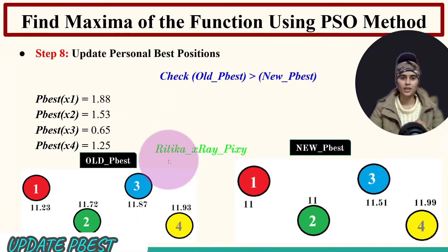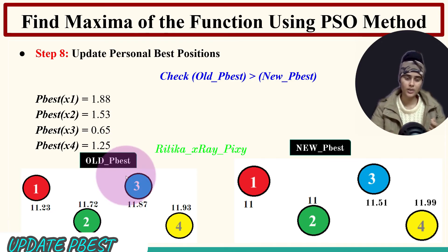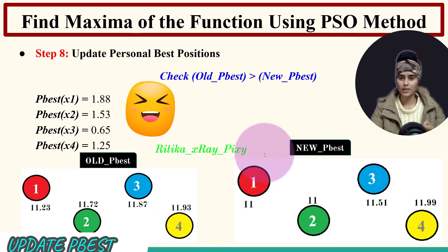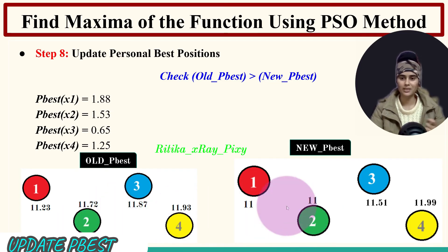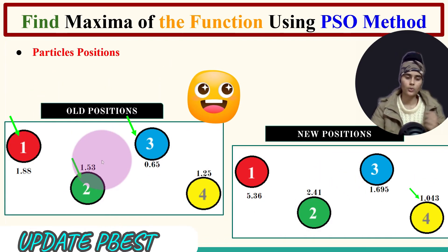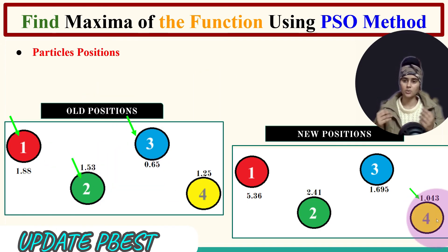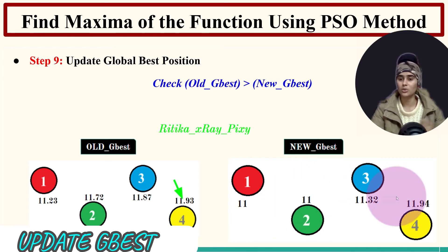Now we update the personal best by comparing old and new fitness values. Since we are doing direct maximization, we keep the maximum. Particle 1: old personal best is better. Particle 2: old personal best is better. Particle 3: old personal best is better. Particle 4: new fitness 11.99 is higher than old 11.93, so we update particle 4's personal best to position 1.043 with fitness 11.99.